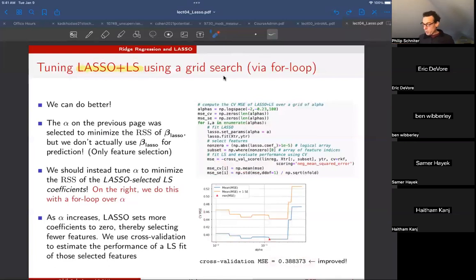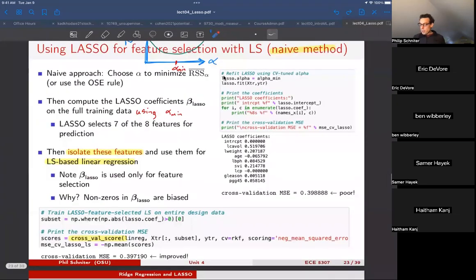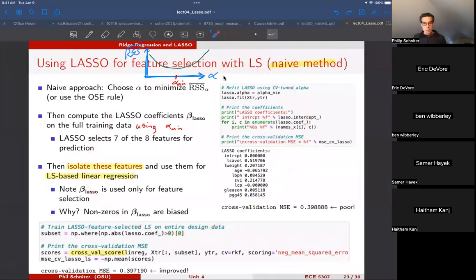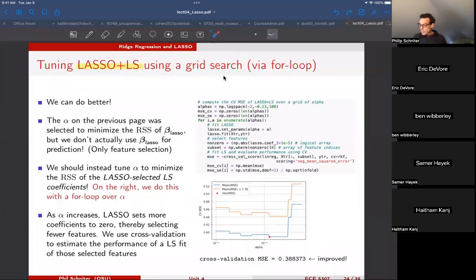So this is one approach. Any questions on this? The difference between the two approaches is the RSS bar used. It's how we computed RSS bar. Here we computed RSS bar based on the biased LASSO coefficients, whereas here we computed RSS bar inside this cross-validation score using the unbiased least squares coefficients. So LASSO was only used to extract the subset. And then as soon as we got that subset, we fit the coefficients using least squares. We measured performance on the least squares coefficients, and that works better.